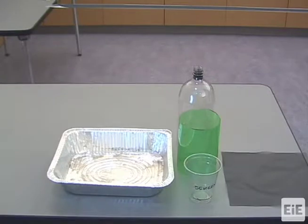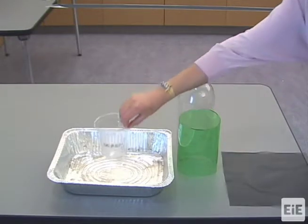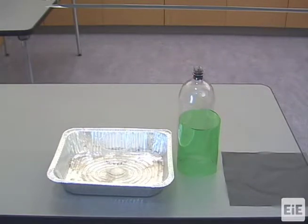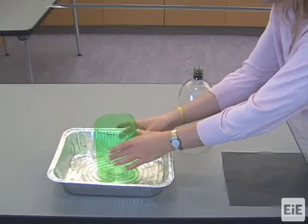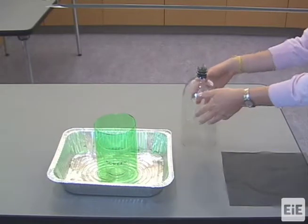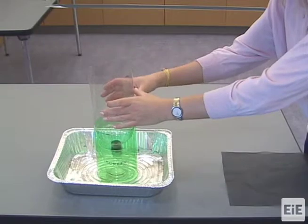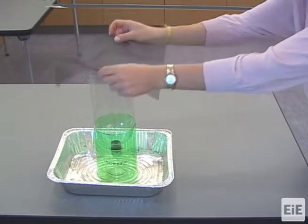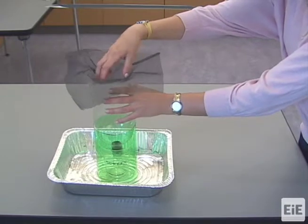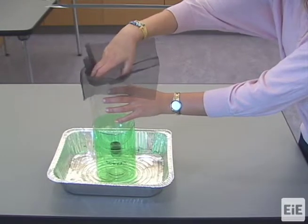If you choose to prepare the optional filter holder stand, students begin by positioning the collection cup inside the basin. Next, the filter holder stand is placed over the collection cup. Students then slide the filter holder into the stand, so it rests vertically with the drain facing down. Now, the filter material being tested is placed in the correct place in the filter holder, as demonstrated earlier.